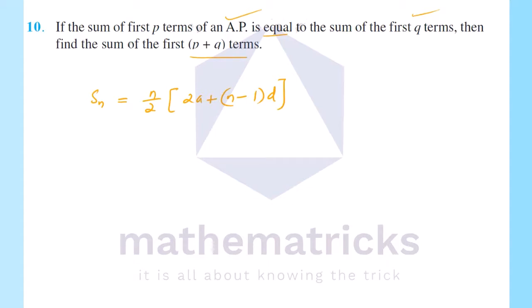The sum of the first p terms of an AP is equal to the sum of the first q terms of an AP. We set Sp equal to Sq.